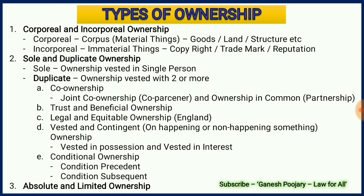The last subcategory is conditional ownership, which has two conditions. Condition precedent means you must complete this condition first, and only after that will you become the owner. Condition subsequent means I will make you the owner, but after you become the owner you have to fulfill this condition, and only when that condition is completed does ownership fully vest. The third type of ownership is absolute and limited ownership. Absolute ownership is complete ownership over a particular property or thing, whereas limited ownership may have certain clauses over the entire ownership.